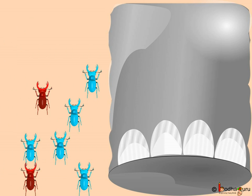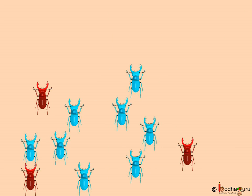But an unexpected incident of a herd of elephants passing by and killing most of the red beetles by chance led to the new beetle population being mostly blue.